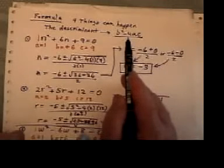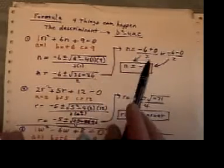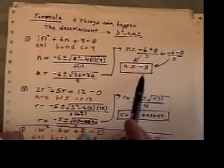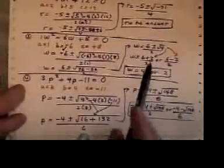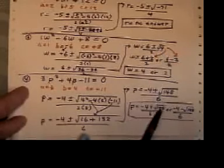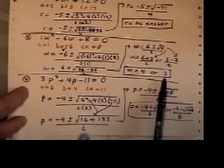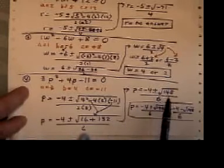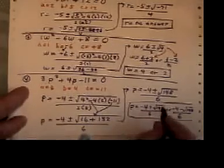Recapping — here are the four things that can happen, and they all involve the discriminant: what happens to b squared minus 4ac? With the first question, the discriminant was zero, and we only got one answer. Second question, there was a negative number under the square root, so we got no answers. The third and fourth questions had a positive number under the square root, so we got two answers. If it's a perfect square root, we get two whole number or rational answers. If it's a non-perfect square root, like 148, we get two irrational answers.